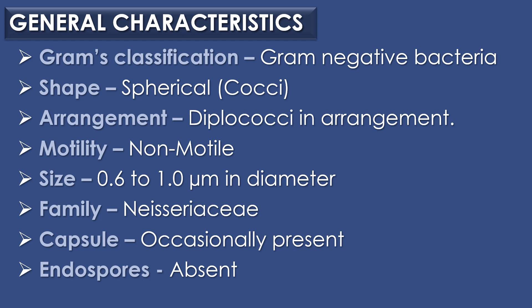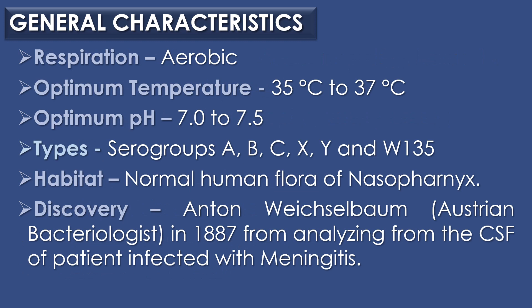Neisseria meningitidis is a gram-negative spherical shaped cocci, and its arrangement is diplococcal arrangement, and it is non-motile in nature. Its size ranges from 0.6 to 1 micrometer in diameter. It belongs to the family Neisseriaceae and capsules are occasionally present and endospores are absent. Aerobic mode of respiration is observed, with an optimum temperature of 35°C to 37°C and optimum pH of 7 to 7.5.